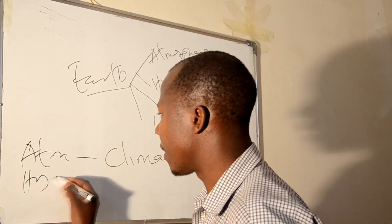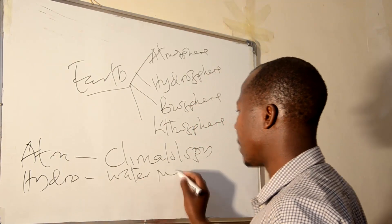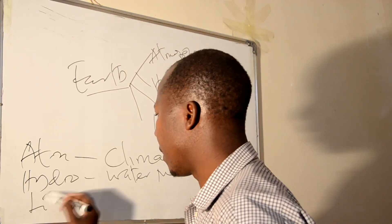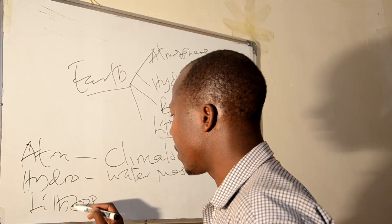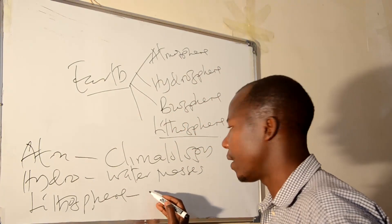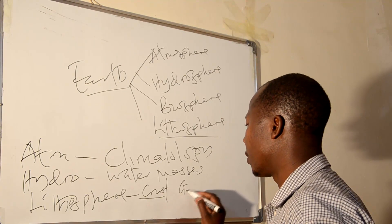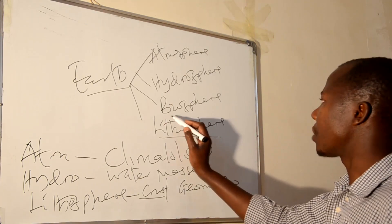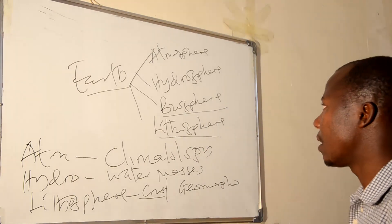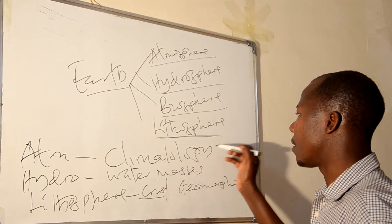The topic concerned with the hydrosphere is called water masses. The topic concerned with the lithosphere — which is associated with the crust — at a diverse level is called geomorphology. But for the biosphere, there is no single topic at a diverse level, because living things can be found even in the atmosphere, in water bodies, or within the crust.